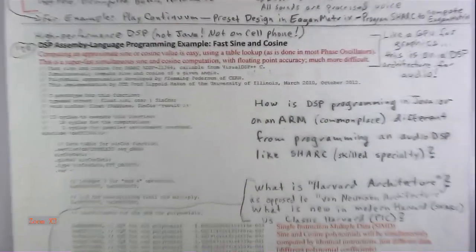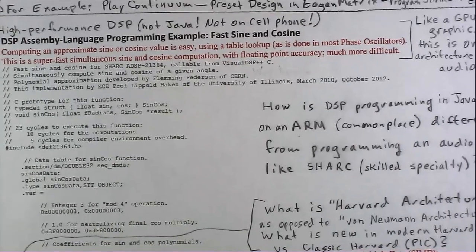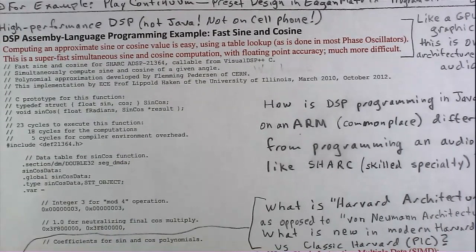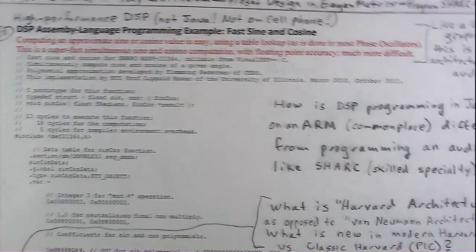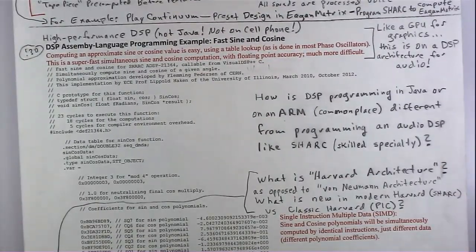The vast majority of actual DSP done is done on cell phones in Java or something. A cell phone's already not a very powerful processor, and then you're using Java, which gets you another 1% of what it could possibly do — very poor use of resources. But it turns out it doesn't matter. If it's fast enough and it does the job you need, then so what? For a lot of things, it's just not cost-effective for people to spend time learning how to program special algorithms.